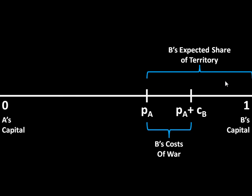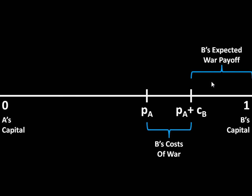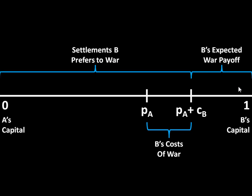Now we have to do the exact same thing for B. Over here, this was B's expected share of the territory, and B's costs of war are of size CB. This can be a little confusing because we added CB here — but costs are supposed to be negative. However, from B's perspective, B likes settlements as far to the left as possible. So by adding CB to this number line, we have moved the expected outcome of the war for B closer to B. After we deduct these costs of war, B's expected war payoff is this interval. B is willing to settle anywhere to the left of PA plus CB, because any such settlement gives more to B than what B would receive out of a war.